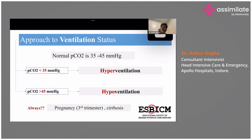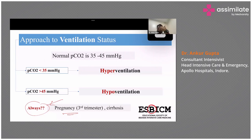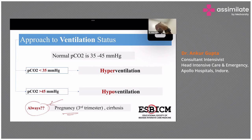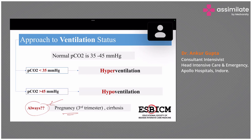But what you need to understand is: is this formula always applicable? No. Anything which pushes the diaphragm upwards towards the lungs — like massive ascites which is chronic, pregnancy, or an obese patient — these people are a little hyperventilating. So their normal PCO2 level is somewhere around 30.